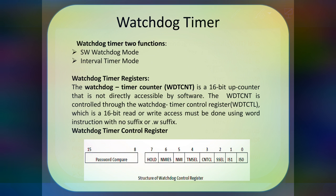Now we will look at the watchdog timer control register. The watchdog timer control register is also system bit size. In the higher byte, it holds the password, which protects the content of the watchdog timer. Whenever a password is provided, it is compared with the password stored in the watchdog control register. When the passwords match, it allows accessing or modification. Otherwise, it does not allow accessing the watchdog timer registers or control register. The lower byte deals with more functions — the entire function of the watchdog timer is controlled by the lower byte.